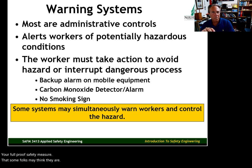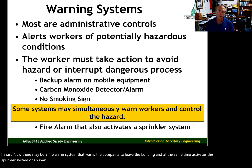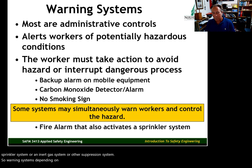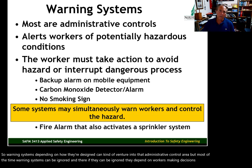There are more complex warning systems that combine other components to also control the hazard — for example, a fire alarm that warns occupants to leave while simultaneously activating a sprinkler system, inert gas system, or other suppression system. Warning systems, depending on design, can venture into the engineering control area. But most of the time, warning systems can be ignored — and if they can be ignored, they depend on workers making decisions, which puts them in the administrative control category.